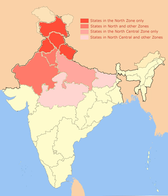North India includes the Hindu pilgrimage centres of Chardam, Haridwar, Varanasi, Ayodhya, Mathura, Allahabad, Vaishno Devi and Pushkar, the Buddhist pilgrimage centres of Sarnath and Kushanagar, the Sikh Golden Temple, as well as World Heritage Sites such as the Nanda Devi Biosphere Reserve, Kajuraho Temples, Hill Forts of Rajasthan, Jantar Mantar, Jaipur, Bhimbetka Caves, Sanchi Monuments, Qutb Minar, Red Fort, Agra Fort, Fatehpur Sikri and the Taj Mahal.